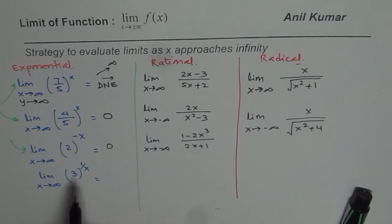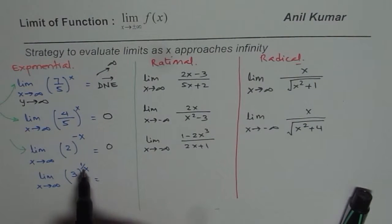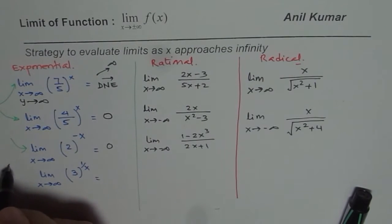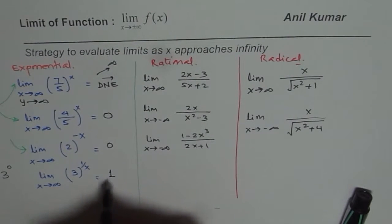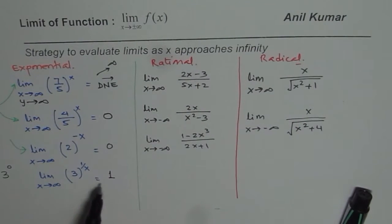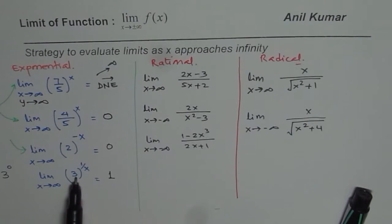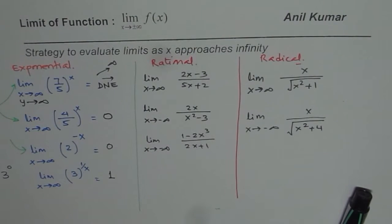For 3 to the power of 1 over x — as x approaches infinity, 1 over x becomes 1 over infinity, which equals 0. So we get 3 to the power of 0, and that equals 1. This is very important: 1 over infinity is 0, and anything to the power of 0 is 1, so this function approaches 1.